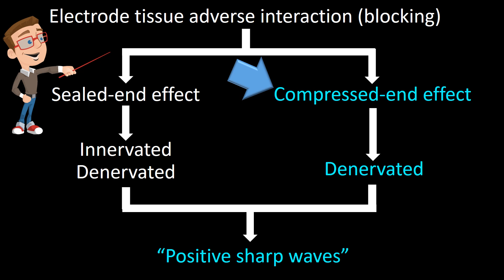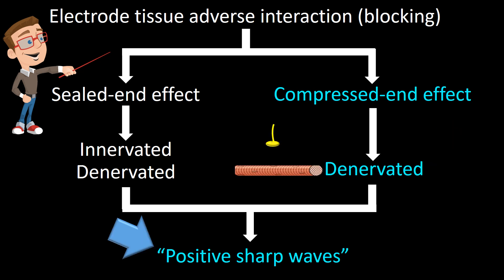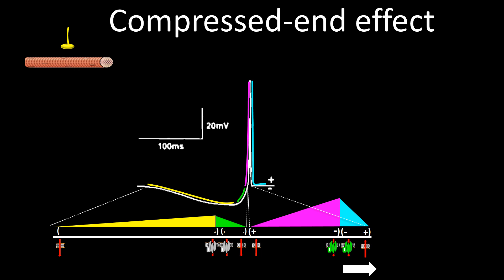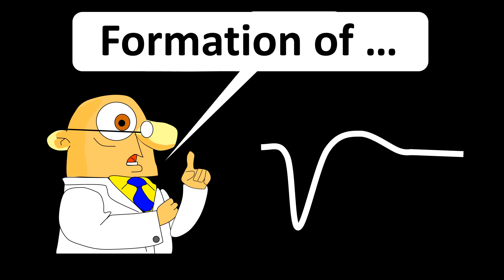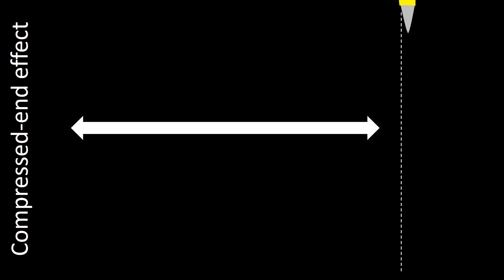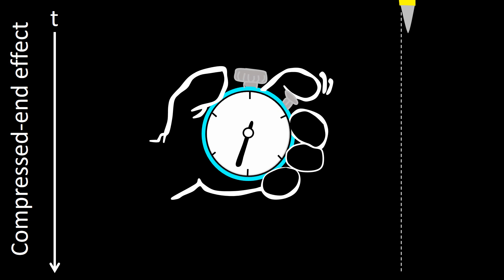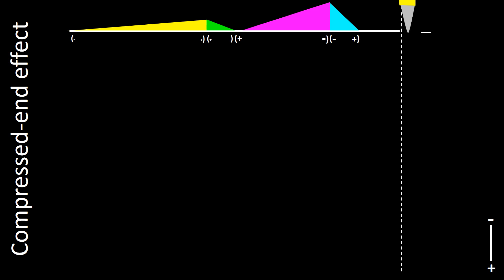Now let's look at how compressed-N effect in denervated fibers produces morphologically positive sharp waves. Since we are talking about denervated muscle fibers, we use the same octopole representation from the previous section. The interrupted line is the boundary between the compressed-N effect area and the non-compressed denervated muscle fibers. Time advances downwards for the octopole and to the right for waveform formation. At this time the octopole is too far from the electrode to influence the waveform, so the tracing is at baseline.